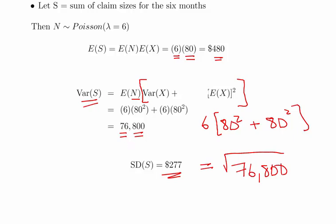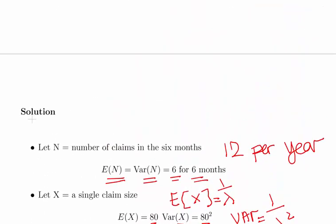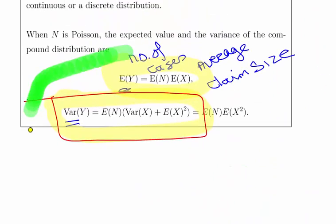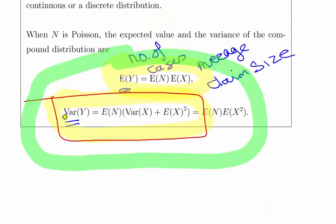The key challenges in this question were: first, adjusting from 12 months to six months to get the correct Poisson mean; and second, knowing how to work with the exponential distribution parameters — specifically that the variance equals the mean squared. Those were the two critical steps alongside applying the compound Poisson variance formula.